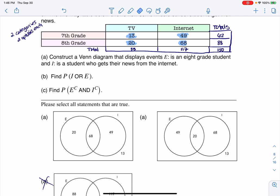Alright, so the two events they're asking us to look at are 8th grade and internet. So what I'm going to do, I'm going to change the colors here, and I'm going to go with the 8th grade row and the internet column.